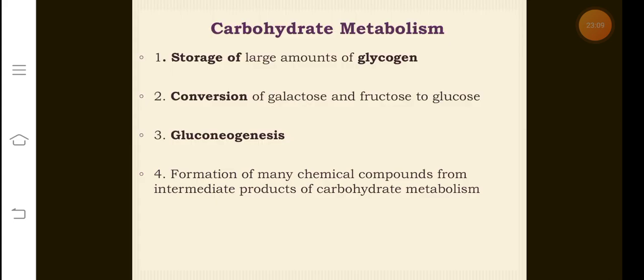The metabolic functions of the liver: first is carbohydrate metabolism. The liver stores large amounts of glycogen. It can convert galactose and fructose to glucose. Gluconeogenesis — the formation of glucose from non-carbohydrate sources such as lactate, pyruvate, or amino acids — can also occur in the liver. Note that the conversion of fructose and galactose to glucose cannot be termed as gluconeogenesis. The liver also forms many chemical compounds from intermediate products of carbohydrate metabolism.